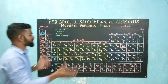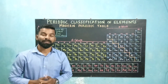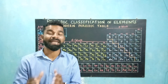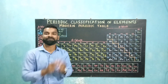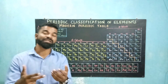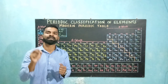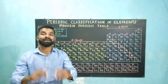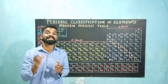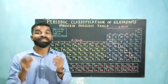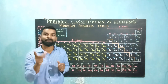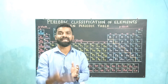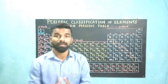The modern periodic law says that the properties of the elements are a periodic function of their atomic numbers. Here, properties refer to the physical and chemical properties of the elements, and periodic function means the properties repeat after a certain interval. On adding a certain number to the atomic number of an element in the previous period, we get an element in the next period in the same group with resembling properties. These numbers which we add are called magic numbers.